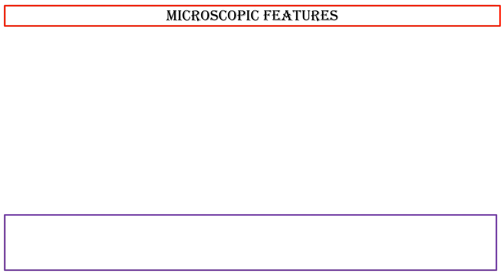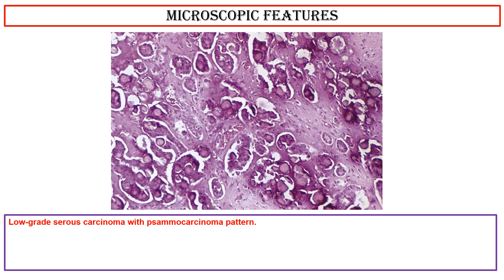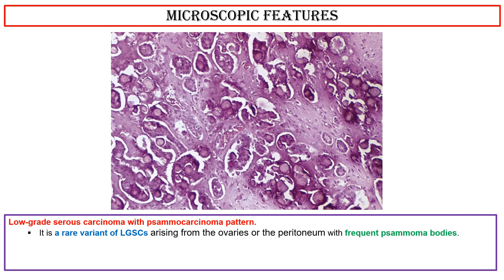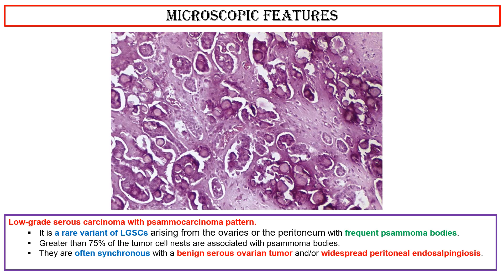Microscopic features of low-grade serous carcinoma with psammomatous carcinoma pattern: It is a rare variant of low-grade serous carcinomas arising from the ovaries or the peritoneum with frequent psammoma bodies. Greater than 75% of the tumor cell nests in this photo are associated with psammoma bodies. They are often synchronous with a benign serous ovarian tumor and/or widespread peritoneal endosalpingiosis. Biologic behavior is similar to borderline serous tumors with a favorable survival time.